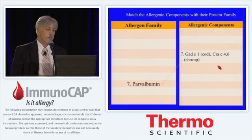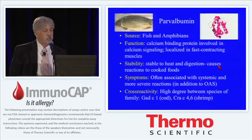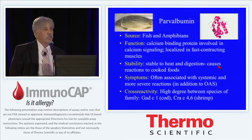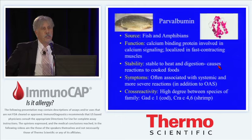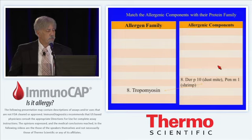We have the next family, the parvalbumins. The example provided is cod, CAD-C1, and shrimp, PEN-A1 cross-reactive variants 4 and 6. Parvalbumins are found primarily in fish and amphibian extracts. They are calcium-binding proteins involved in calcium signaling, localized in fast-contracting muscle. They're stable to heat and digestion, thus causing reactions when consumed in foods. Often they're associated with systemic reactions and more severe reactions in addition to oral allergy symptoms. There's a high degree of cross-reactivity among this family.